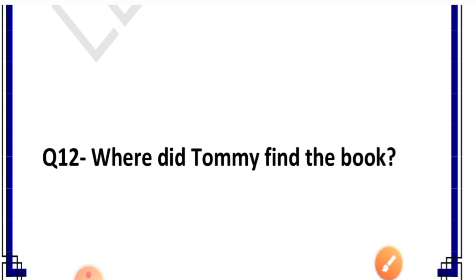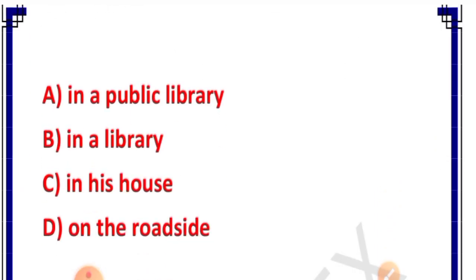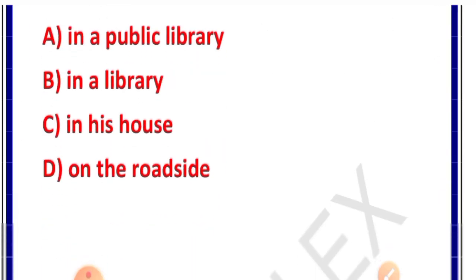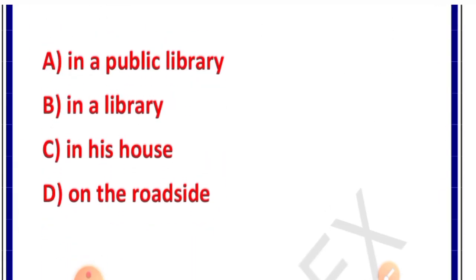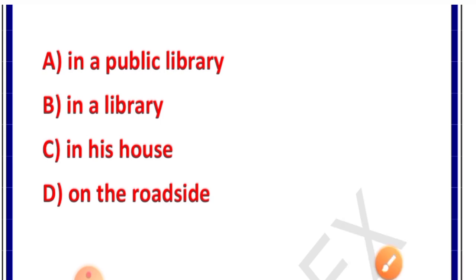Question number 12: Where did Tommy find the book? Options: A. In a public library, B. In a library, C. In his house, D. On the roadside. Correct answer is option C — in his house. Uske khud ke ghar mein usko woh book mili thi.